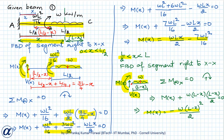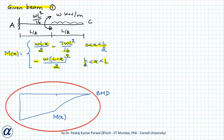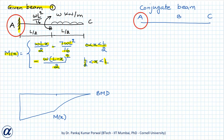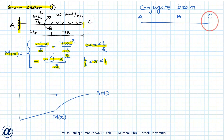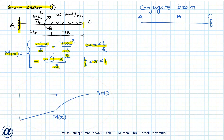So for beam one, the bending moment is: Mx = WLx/2 − 7WL²/16 for 0 < x < L/2, and Mx = −W(L − x)²/2 for L/2 < x < L. This is the bending moment diagram for the beam. For the conjugate beam: at A, the original beam has a fixed support, so the conjugate beam has a free end at A. At C, the original beam has a free end, so the conjugate beam has a fixed support.